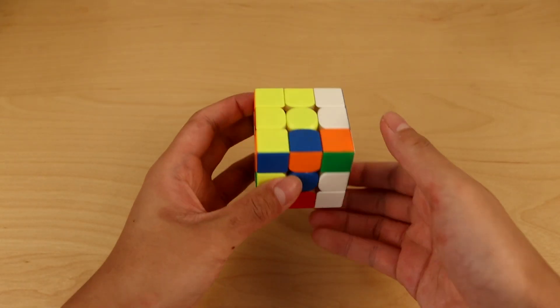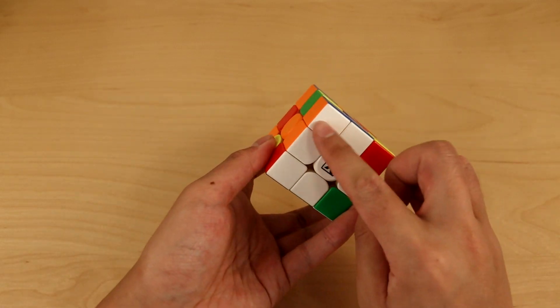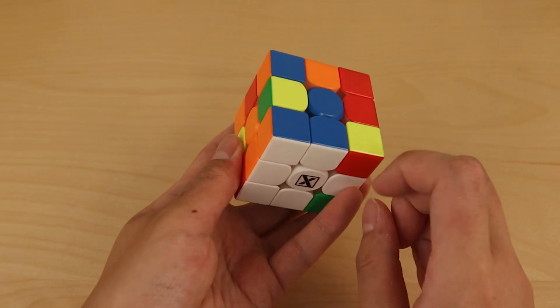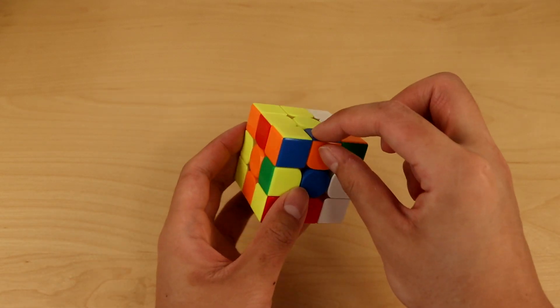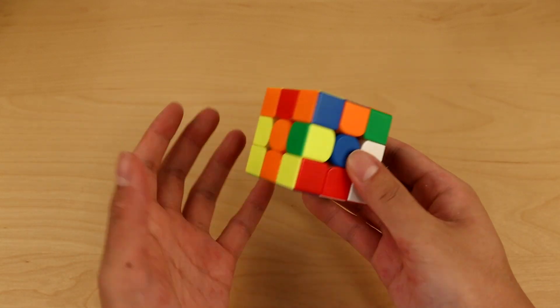But it gets better. If you notice the cross we make, we have a free corner here with the white, orange, and blue. So whenever you get a free corner like that, you want to insert the edge piece before you make the cross, that way you have an X-cross.